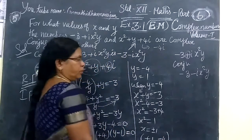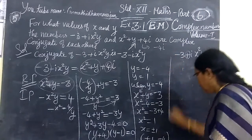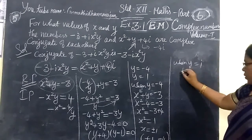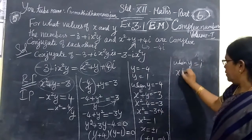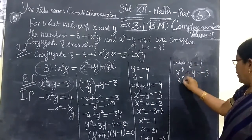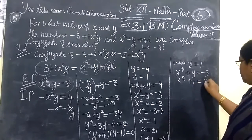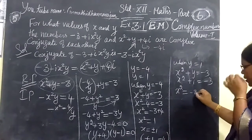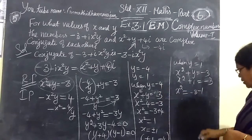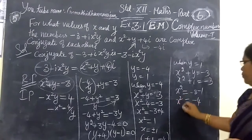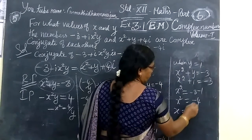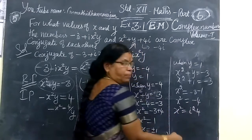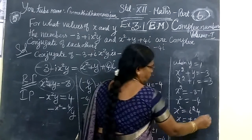Another set of solutions: when y equals 1, substitute into x squared plus y equals minus 3. You get x squared plus 1 equals minus 3, so x squared equals minus 3 minus 1, which is minus 4. Therefore x squared equals minus 4, meaning x equals plus or minus 2i.